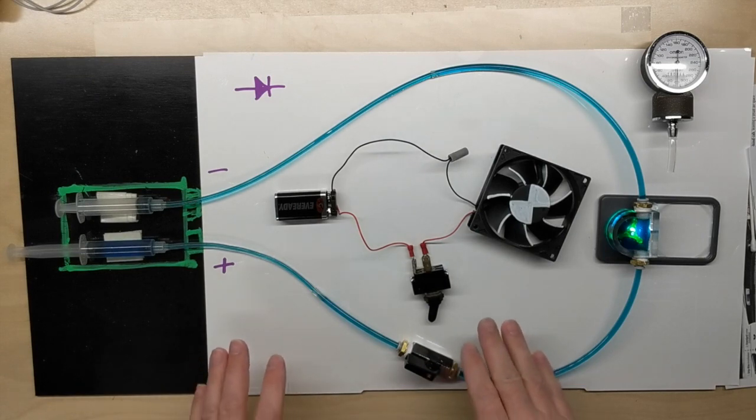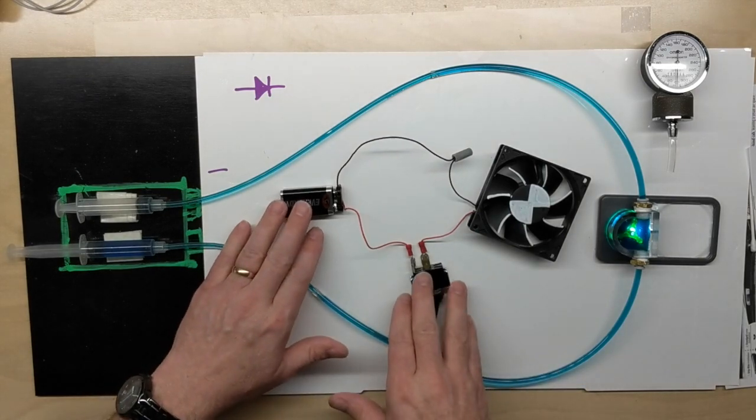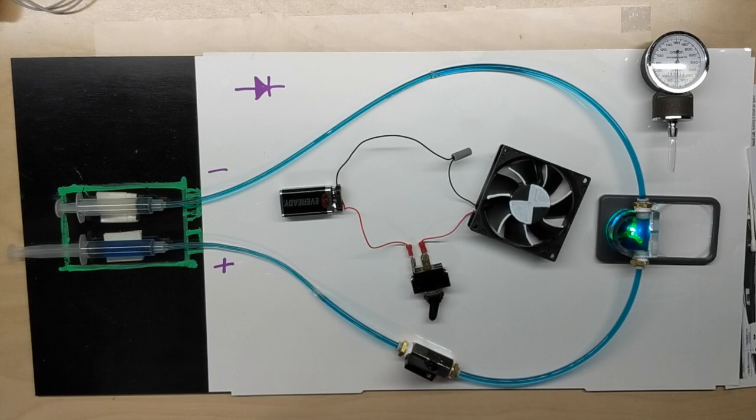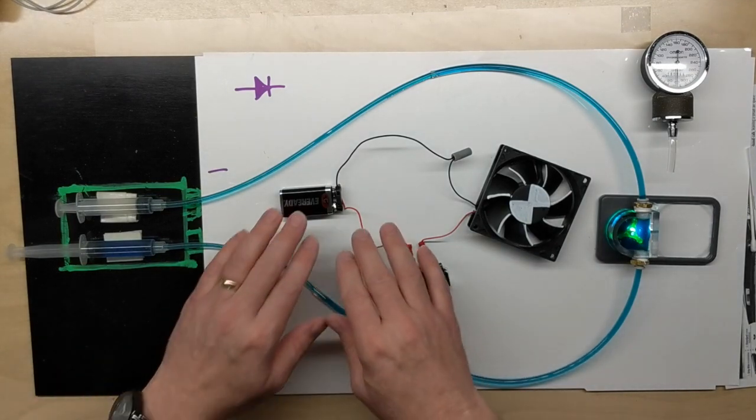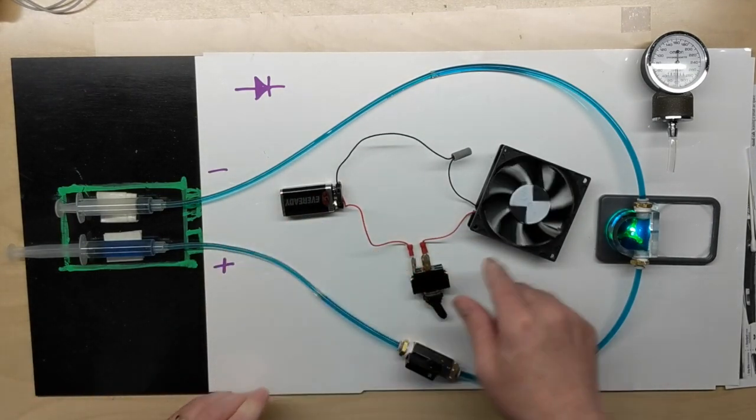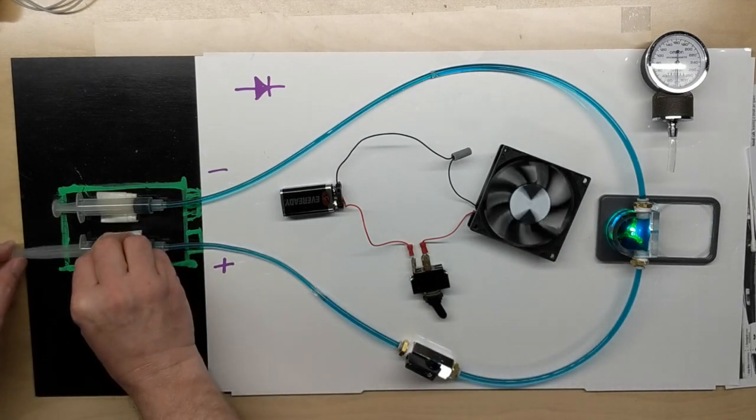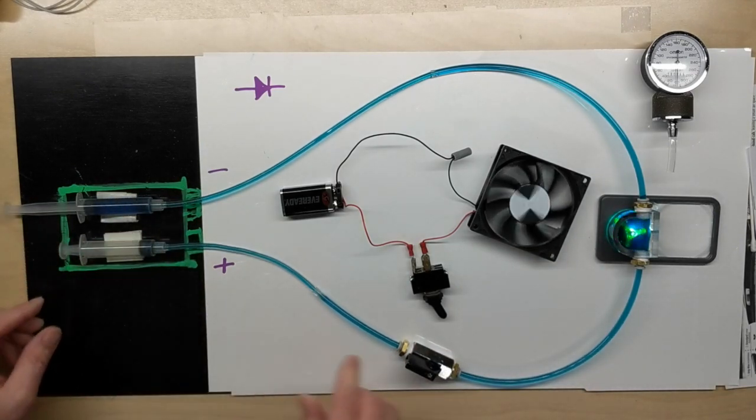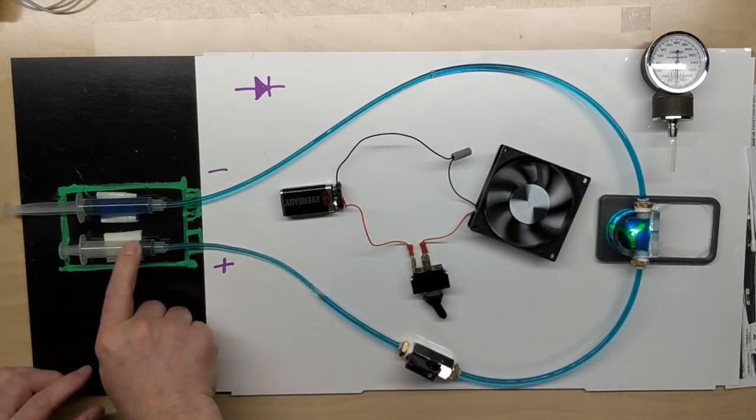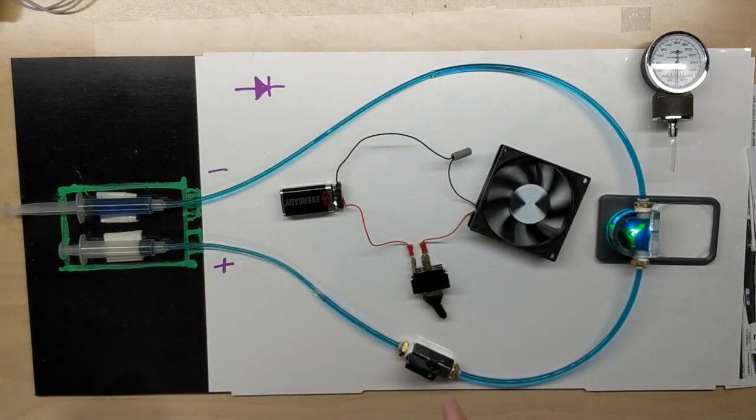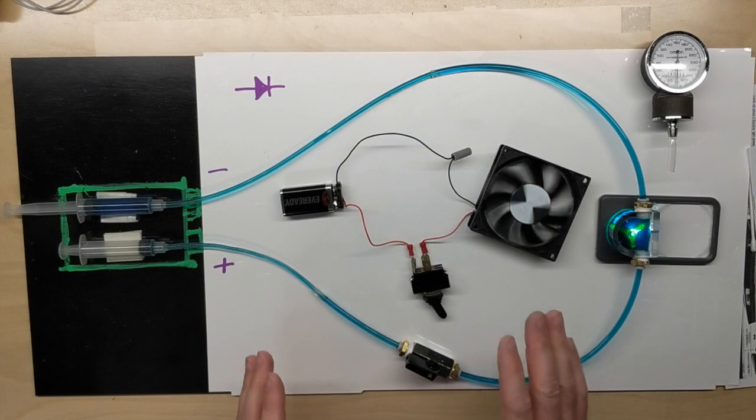So we do understand that to make a circuit work we have to have voltage. Now once we have voltage and we have a complete circuit, then we have flow, just like this represents the battery, its flow from positive to negative until the battery is depleted. So let's talk about flow.